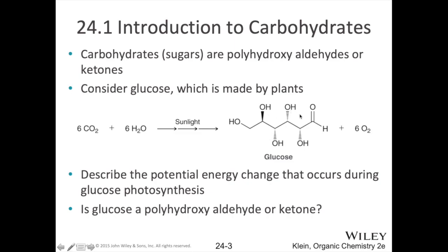A quick note: each of the carbons in the middle of our chain are chiral centers — we've got four different groups coming off those carbons: our alcohol group, the hydrogens that are not shown, and then two different carbon groups. Also note that the two terminal carbons are not chiral. We have two hydrogens on one end — just a CH₂ group — and on the other end we have a carbonyl. So there's going to be a carbonyl present at one end of the molecule. In this case it happens to be an aldehyde, though it could also be a ketone on the second carbon.